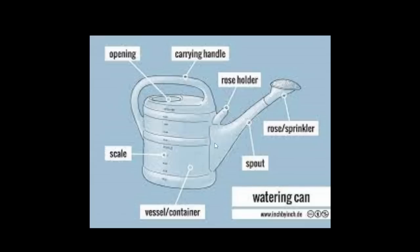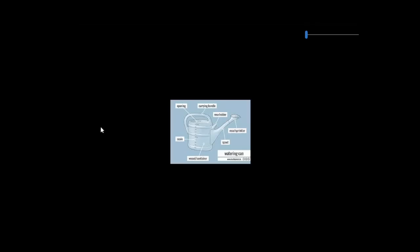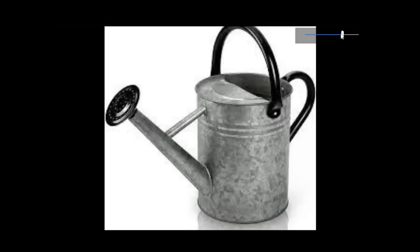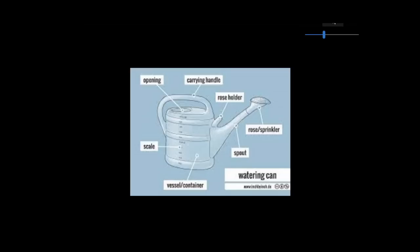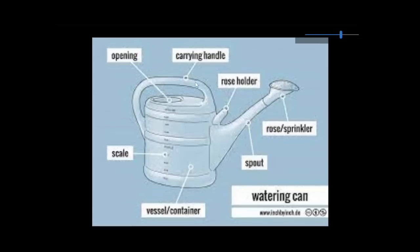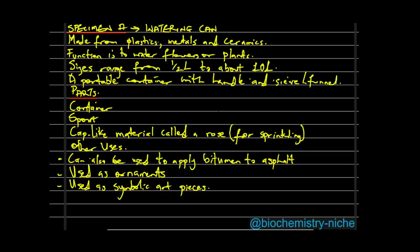This is a picture of the watering can. It has a handle — sometimes two handles — then the bucket. This plastic one has a scale so you can see the water level inside. It also has a rose holder, a sprinkler, a spout, and the vessel.